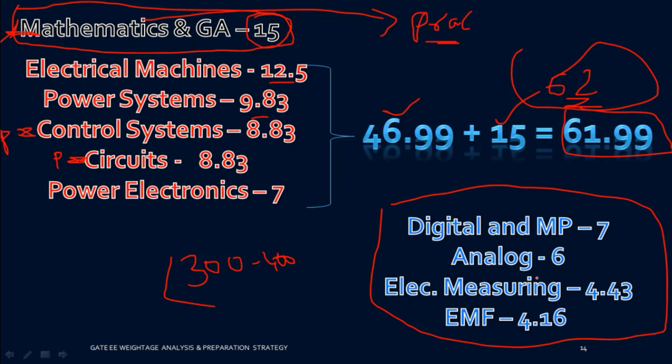For Control Systems, thorough practice is required — it is mostly problem-oriented with very little theory. Circuits also has almost no theory questions, only problems. For Power Electronics, study from the PS Bimbhra book but don't go for very detailed study at this stage. Focus on previous year questions and practice as many problems as possible. If you have extra time, look at the four lower-priority subjects.